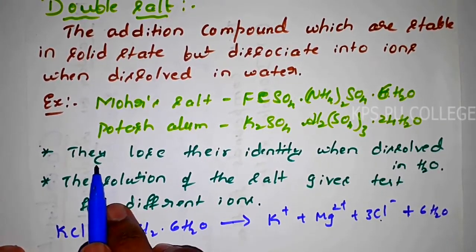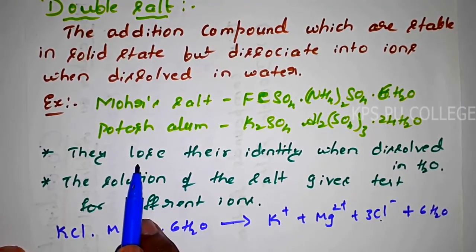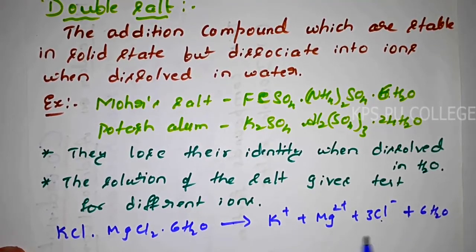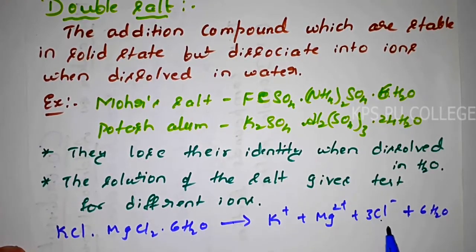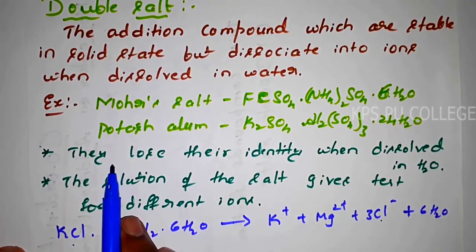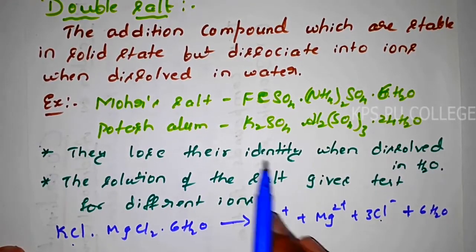The most important property of double salts: they lose their identity when dissolved in water. When dissolved in water, the salt dissociates into free potassium ions, magnesium 2+ ions, and chloride ions — so the identity of the original salt is lost.